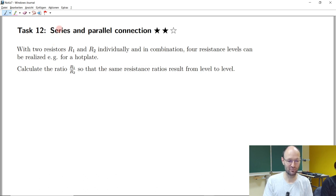In this task 12, which is now about series and parallel connection, we have two resistors. They should be used for a heater, for a hot plate, for something like this. And with these two resistors, we should be able to get four different resistance levels.